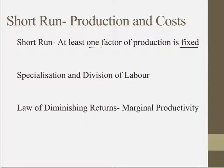In short run production theory there are a few key things to note: specialisation, division of labour, and how that leads into the law of diminishing returns. Specialisation and division of labour came about famously from Adam Smith's Wealth of Nations, where he talks about a pin factory. He explains that one worker making a pin won't be very efficient because there are many different processes involved — grinding, sharpening, etc. He argues that if you increase the workforce and specialise different workers in different parts of the pin-making process, you become far more productive than if each worker made the whole pin.